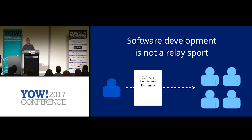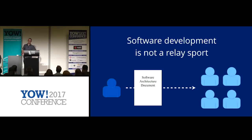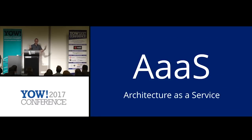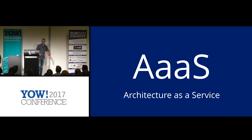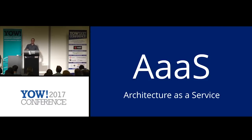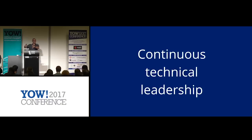He was basically treating software development like a relay sport — doing the first leg and leaving the whole team to do the other 40 kilometers. He was an ass, and this whole process is what I call architecture as a service — a one-way stream. It's also commonly referred to as the seagull approach: you swoop in, you crap on a team, you fly away. This is not continuous technical leadership — it's not getting an architect in for a few weeks and then running away.